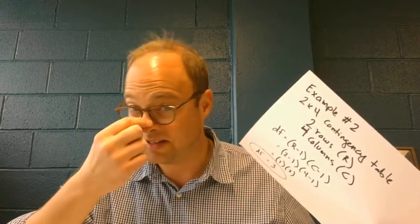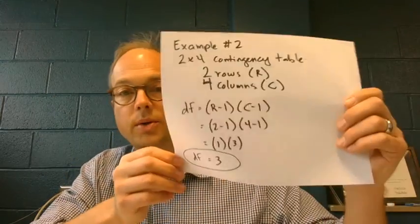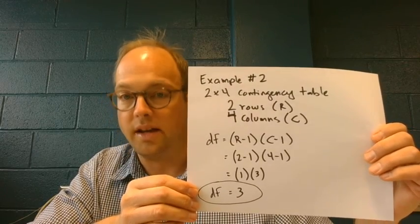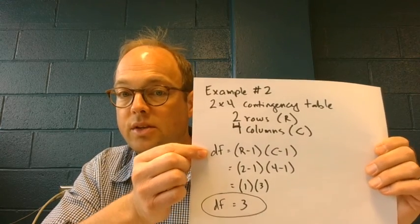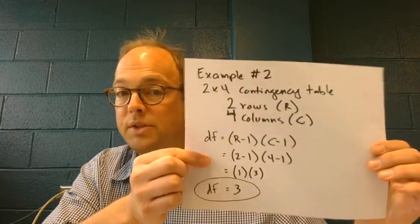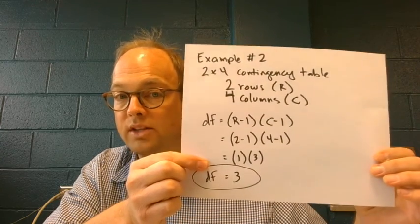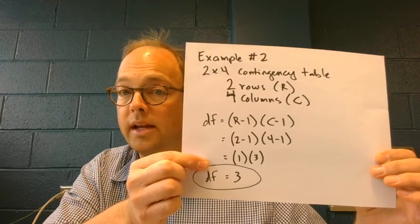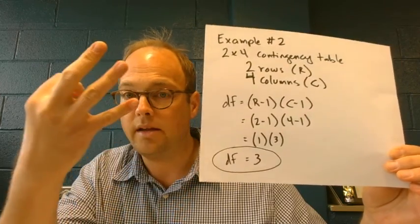Example number two, if you recall — and if you don't recall, pause this and go back to the handout — involved a two by four contingency table: two rows, four columns. Plugging that into the formula: R minus one times C minus one — two minus one times four minus one. Two minus one is one, four minus one is three, one times three is three. So for a two by four contingency table, the degrees of freedom would be three.